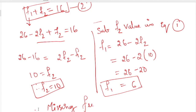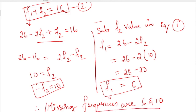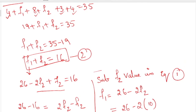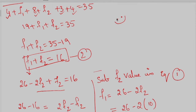Therefore, the missing frequencies are 6 and 10. I hope you have understood how to find out missing frequencies in two variables. Hope you liked the video. Enjoy learning. Bye, thank you.